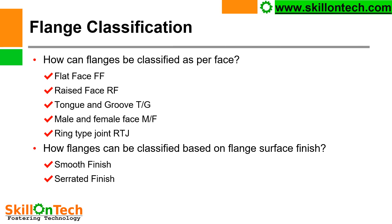How can flanges be classified based on flange surface finish? There are two finishes: one is smooth finish and another one is serrated finish. In smooth finish flanges, the flange finish shall be 125 RA, and spiral wound gaskets always require smooth finish. In serrated finish faces, we can use graphite gaskets, asbestos gaskets, etc. In serrated finish flange faces, we should not use spiral wound gaskets.